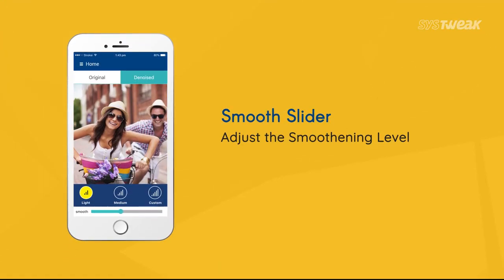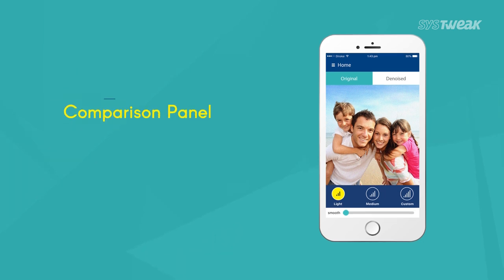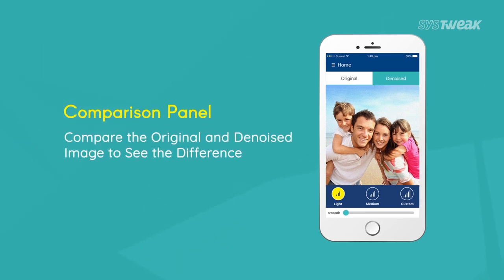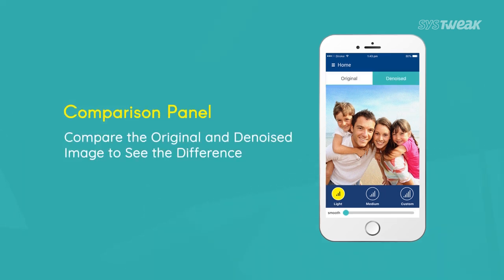It allows you to adjust the smoothing level to make the picture look perfect. It is best suited for photos with tiny spots. You can compare the original and the noise-reduced image to see the difference with just a touch before saving.